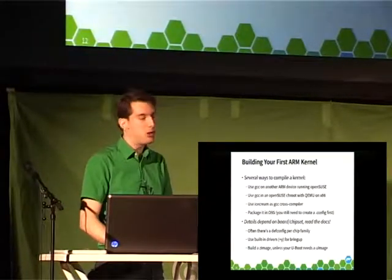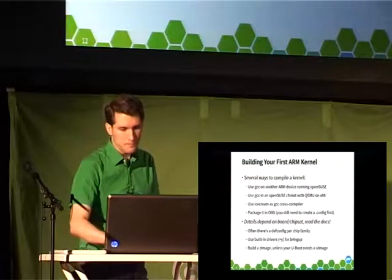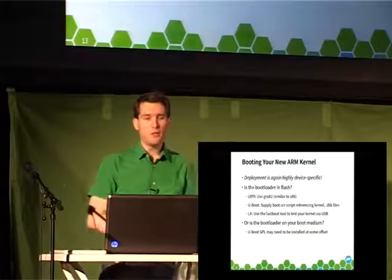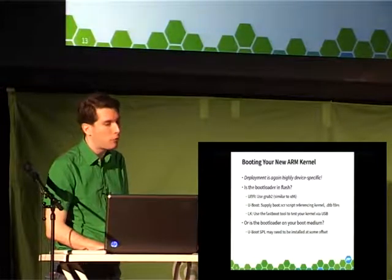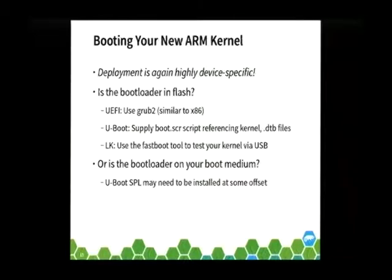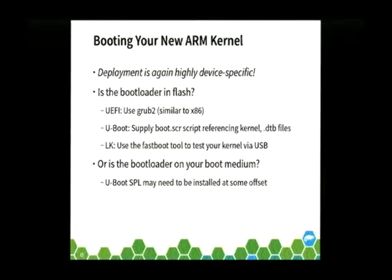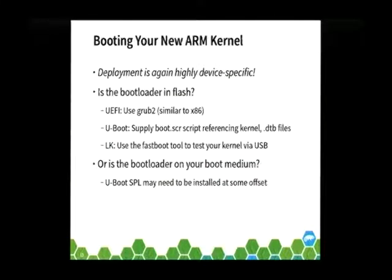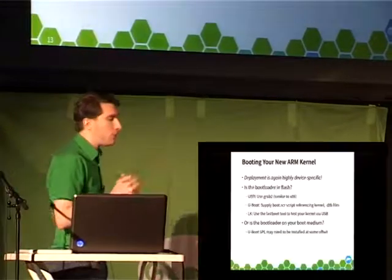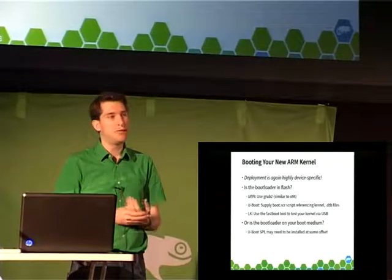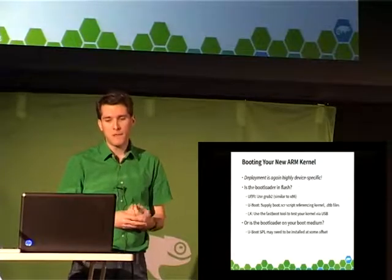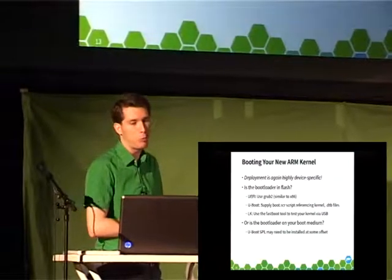Once you've compiled the kernel, there is no generic way to install the kernel image to the system. You need to look into what boot loader the board is using and where it is supposed to be located. Ideally it's in a separate flash, and you can use an SD card or USB stick for the kernel and the OpenSUSE partition. For UEFI — which is the case with most 64-bit servers that have started to emerge — you just need to run grub2-mkconfig and have it added to the config file and it should all work.